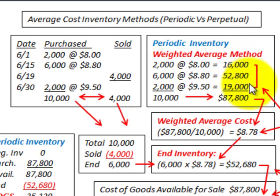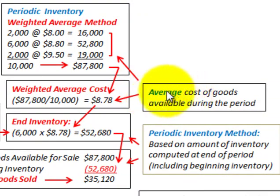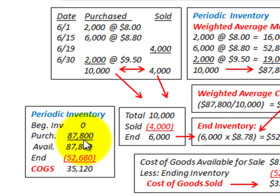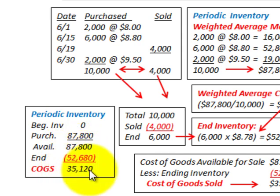Using the periodic method, we calculate the average cost of goods available during the period. We start with our beginning inventory — in this example, zero — and then we have purchases for the period. Beginning inventory plus purchases equals goods available for sale. Then we subtract ending inventory to get our cost of goods sold for the period.